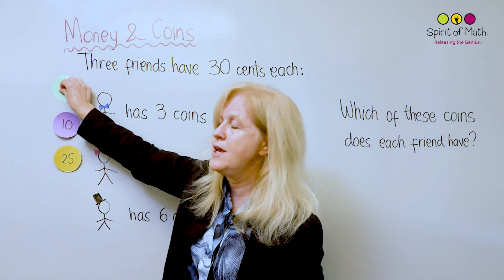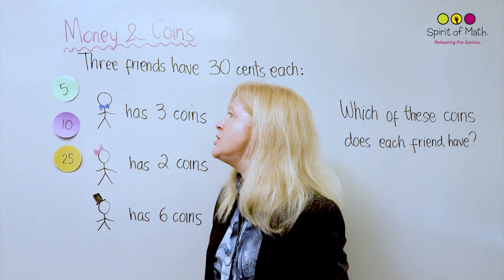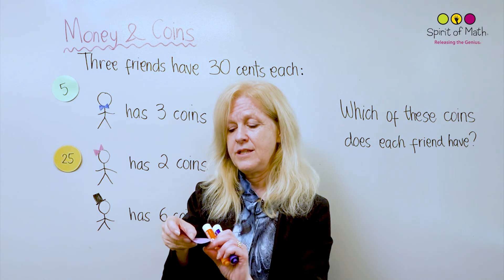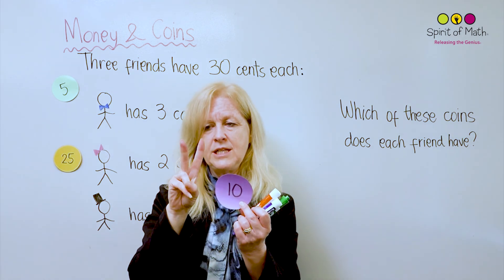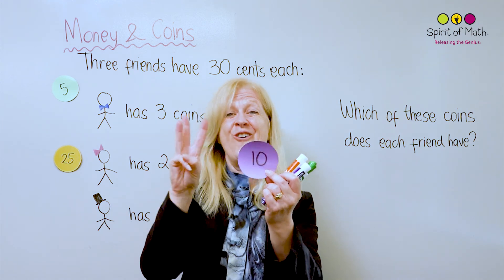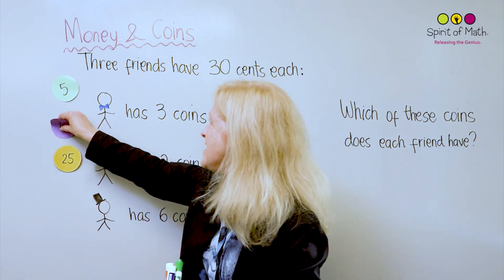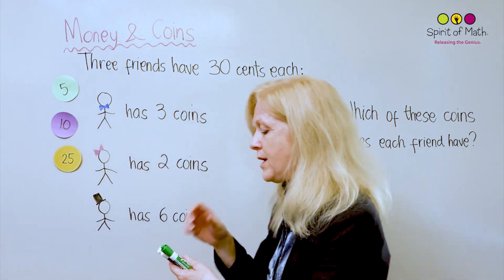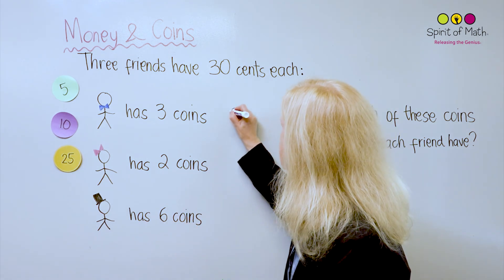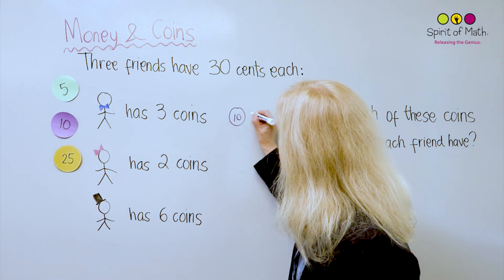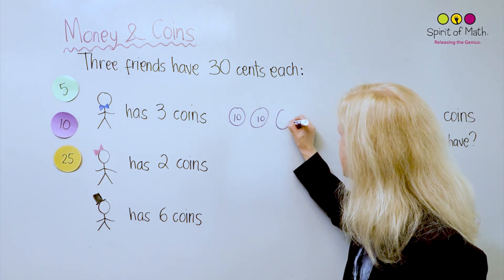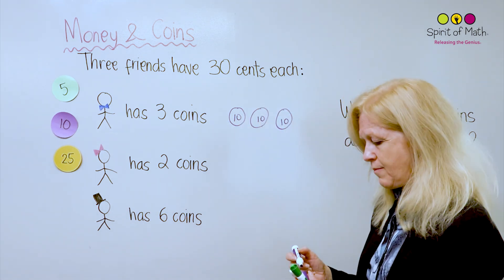So it has to be bigger, which we thought anyway. So if you had 10 cents, let's try that. You'd have a 10 and a 10 and a 10. So that would be 10, 20, 30. Oh, good for you! So it's all the same coin — the 10 cent coins. It's a 10, a 10, and a 10. That's what that person has.